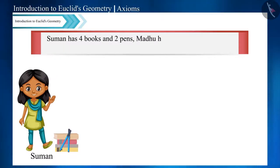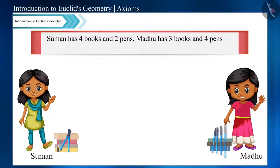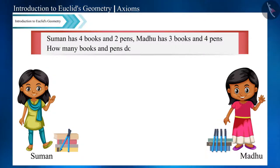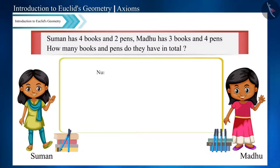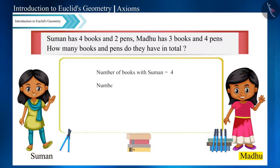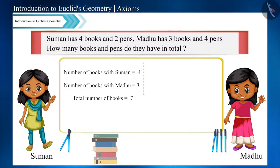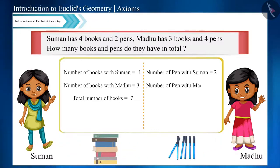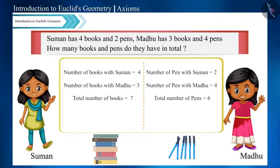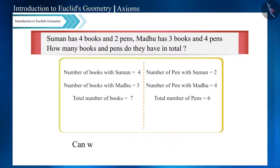Suman has four books and two pens. Madhu has three books and four pens. So tell me, how many books and pens do they have in total? Suman has four books and Madhu has three books — both have seven books in total. Suman has two pens and Madhu has four pens — they both have a total of six pens. Note here we added books to books and pens to pens. But can we add books to pens or pens to books?